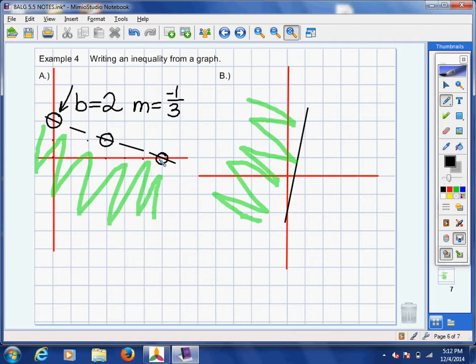Or you could start here and go down one, right three to get to that lower one there. Or you could start at the lowest one here on the x-axis and go up two, left six. So up two, left six is the same thing as negative one-third reduced.